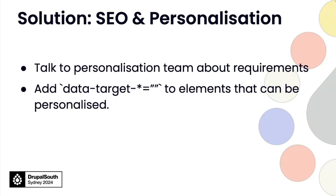The next one is SEO and personalization. We've got that component that generates links and shows them on the page wherever we need to. The personalization team have ideas about what they want to personalize — for example, the events on the home page might change from City of Sydney events to regional events when you're coming from a regional area. We do that with data attributes — in this case, `data-target`. The reason we do this is so that rather than the personalization team going through the entire HTML structure to find the element they want to change, they just go `data-target` equals the tag name, find that element, and then adjust the links.